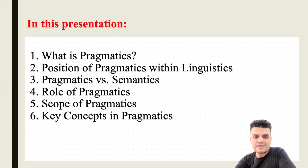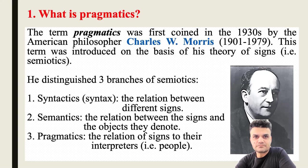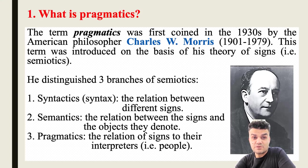First of all, let's define pragmatics. As a term, pragmatics was first coined in the 1930s by the American philosopher Charles Morris. This term was introduced on the basis of his theory of science, which at that time was called semiotics. In his theory, Morris distinguished three branches of semiotics: syntactics — today called syntax — semantics, and pragmatics.